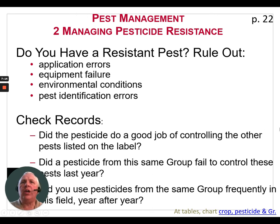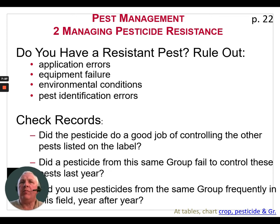We need to check our records. Did the pesticide do a good job of controlling the other pests listed on the label? If only one species of weed escaped while all other broadleafs were killed, perhaps it might be resistant. Did a pesticide from the same group fail to control these pests last year? And have you used a pesticide from the same group frequently in this field year after year? If so, you may be setting yourself up to develop resistance.